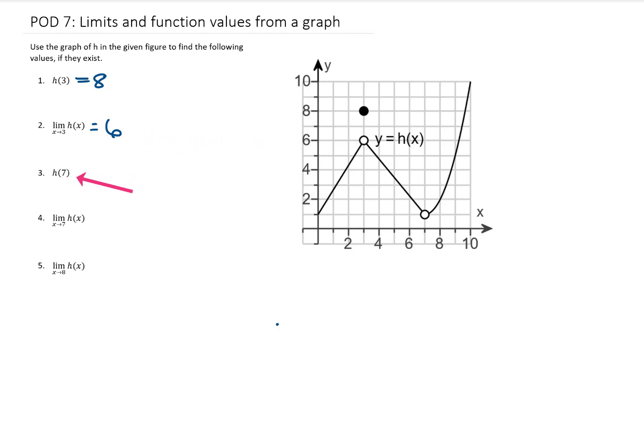Next, h of 7. That means the y value of this function when x equals 7. So we come over here to x equals 7, and we're looking for our function, and the function is blank there. The function does not exist at x equals 7. So we're going to put in DNE for this answer.